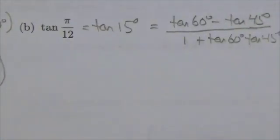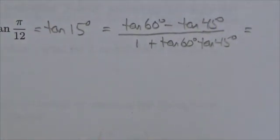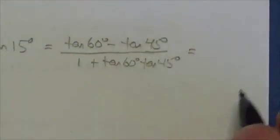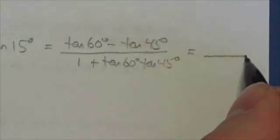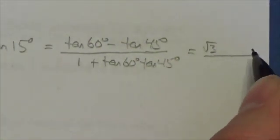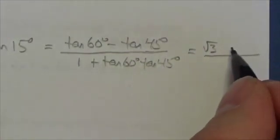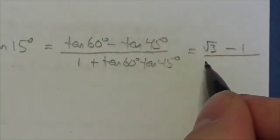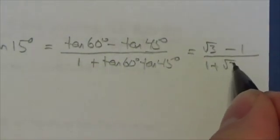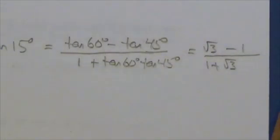Now, the reason I suggest that is because when you do the evaluating here, and you just go back to your unit circle, your special triangles, tangent of 60 is root 3. Tangent of 45 is just going to be 1. And then you're going to have 1 plus tangent of 60 is root 3, tangent of 45 is 1. And there you go.